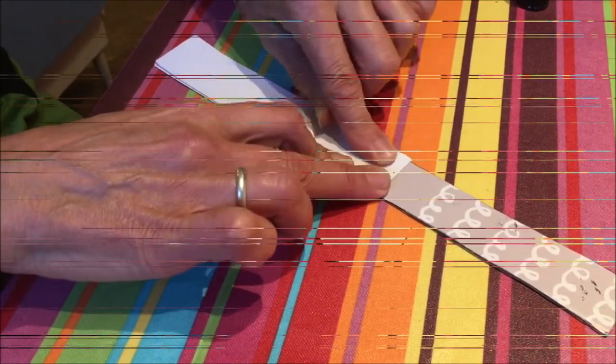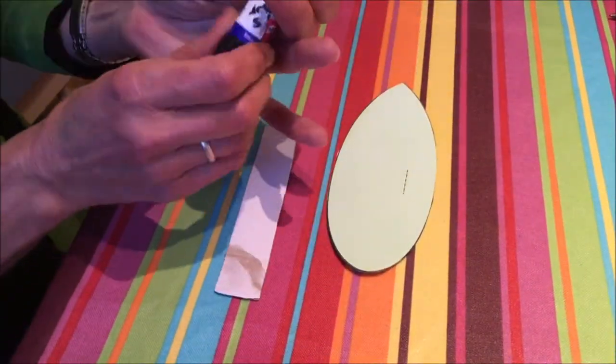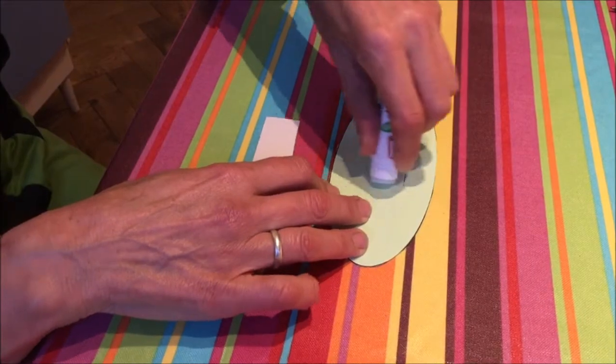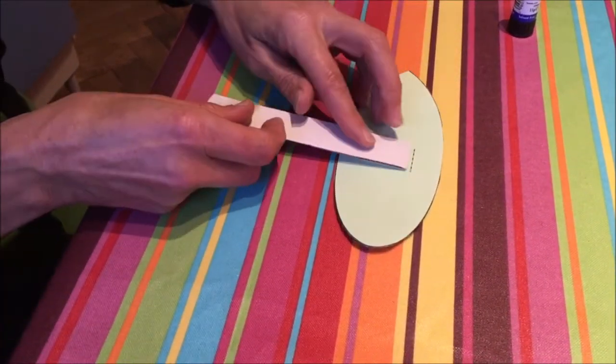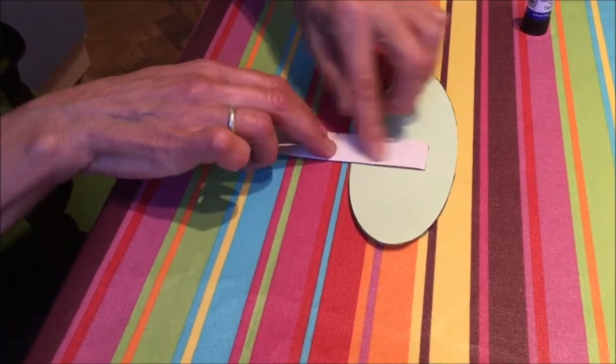Put these aside for now. Next we're going to stick the second strut that was cut out of the cardboard, and that's going on where they're lined up with the dotted line.